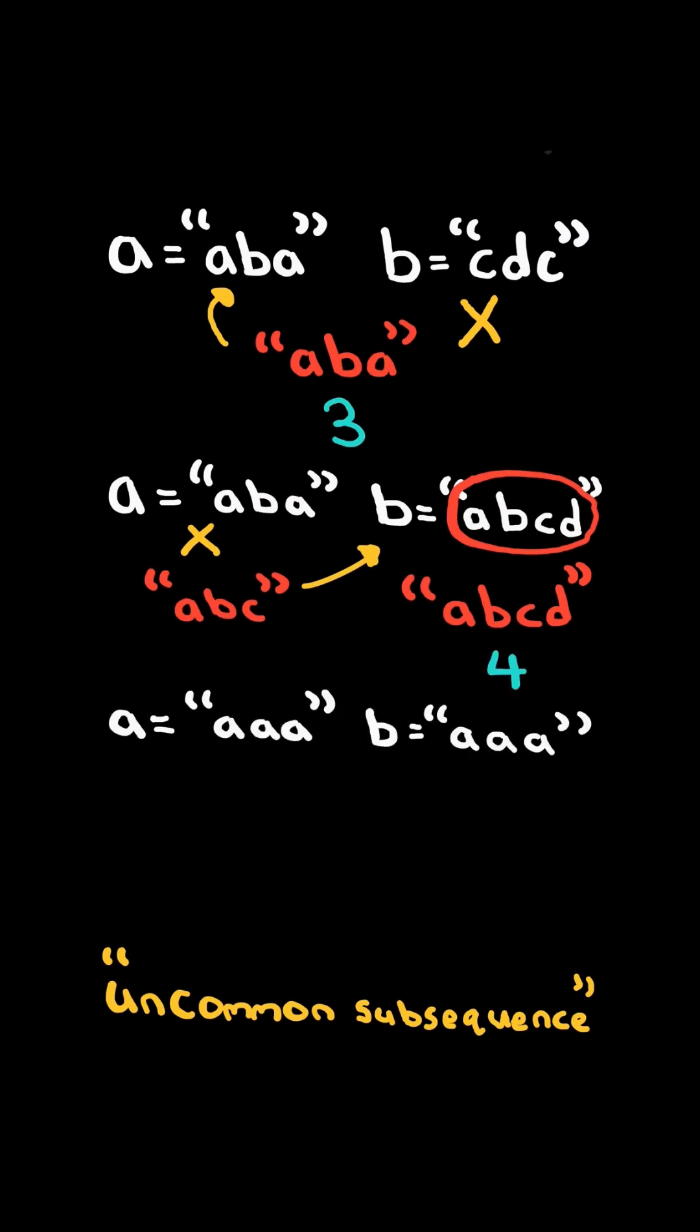And lastly, consider this example. If there are no uncommon subsequences, return negative 1. We will solve this in constant time.